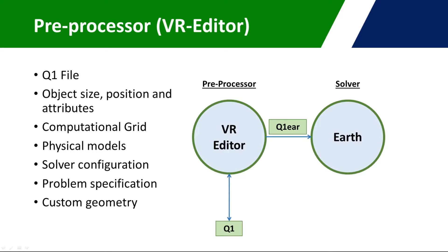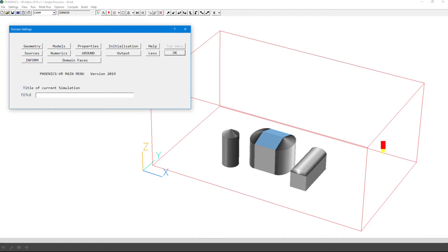The Q1 file is transformed into the Q1 Ear file. This file name is a combination of Q1 and Earth. This file is what the solver uses to perform calculations and generate a solution. Here is an example of a case in the VR editor.